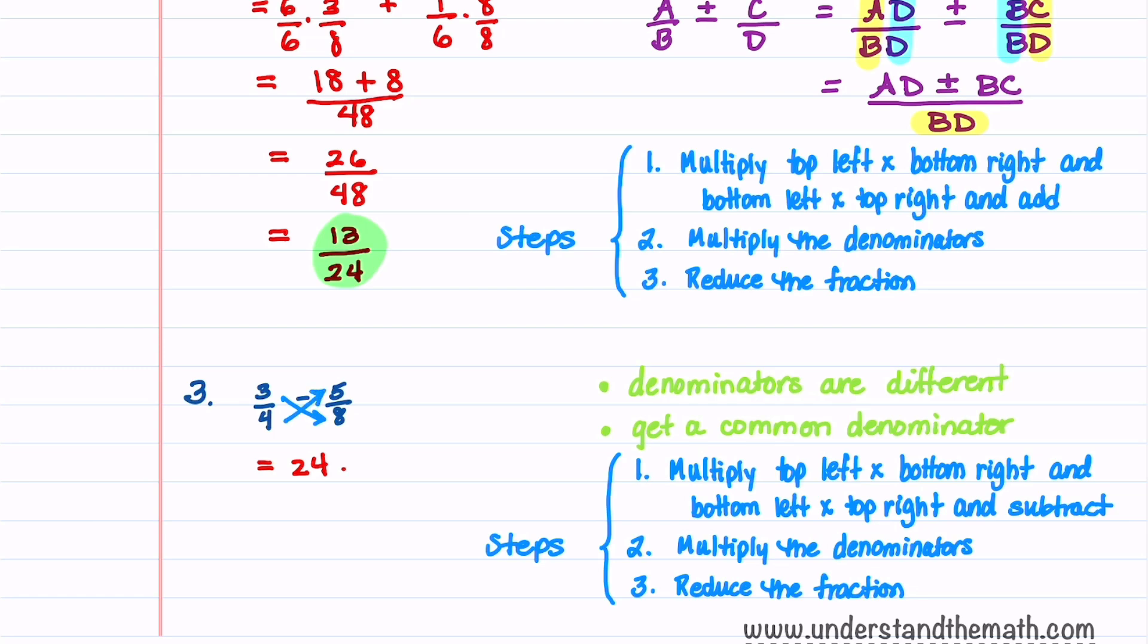And we'll divide all of that by 4 times 8, which is 32. This gives us a value of 4 divided by 32, which reduces to 1 divided by 8.